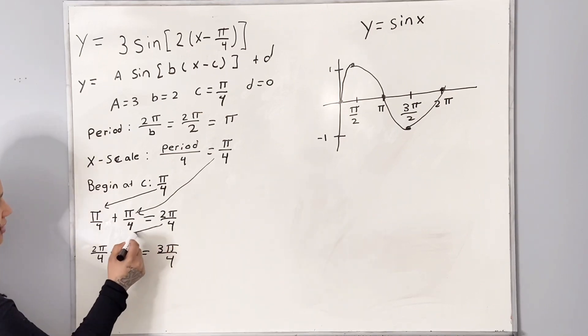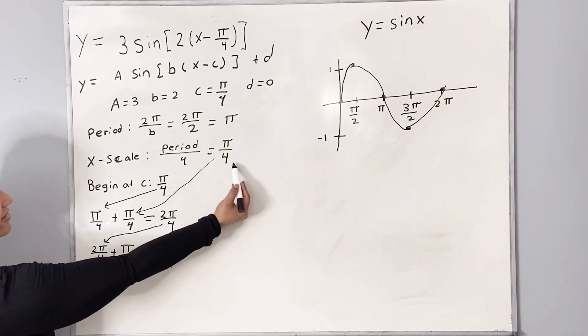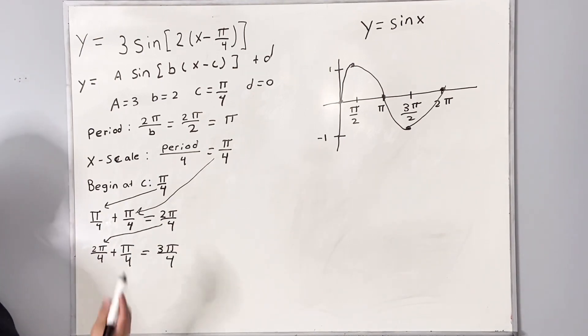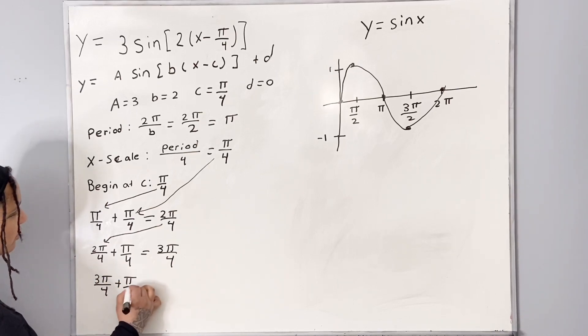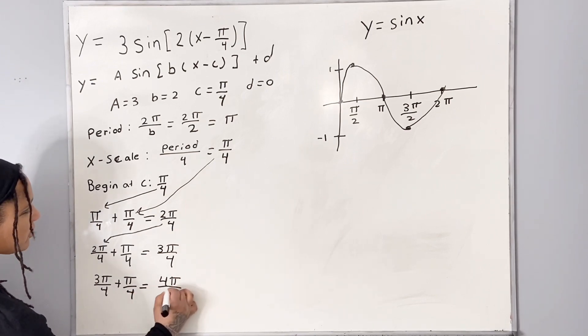Again, we are bringing this 2 pi over 4 over and we're adding another increment of pi over 4. So now we have 3 pi over 4 plus another pi over 4 which is equal to 4 pi over 4.